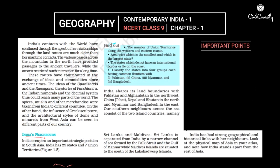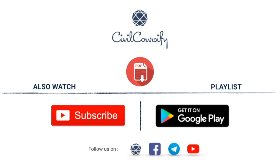We have already located India's neighboring countries on the map, so there is no need to repeat that. You can answer the exercise questions in the comment section — especially the interesting one about the number of union territories along the western and eastern coasts. Hint: two start with D, one with A, one with L, one with P. PDF notes for this video are available on the CivilsCourseify Android app for free. Subscribe to the YouTube channel, download the app, and follow on Facebook and Telegram. Thank you and take care.